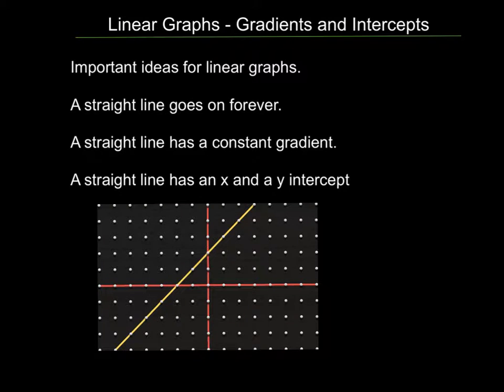In this section we're going to be looking at linear graphs and some important ideas. The first one is the gradient, and that's how steep the graph is. The second one is the intercepts. This point here is the y-intercept, this point here is the x-intercept. A straight line goes on forever. A straight line has a constant gradient. A straight line has an x and a y intercept.